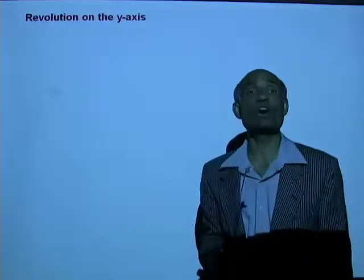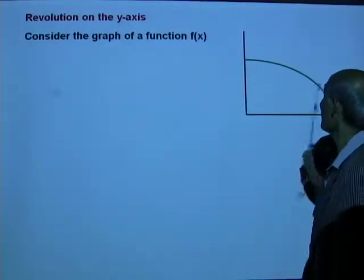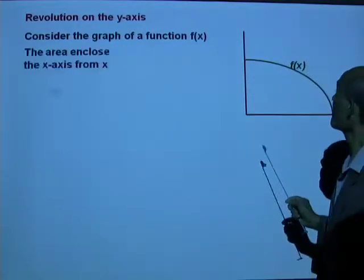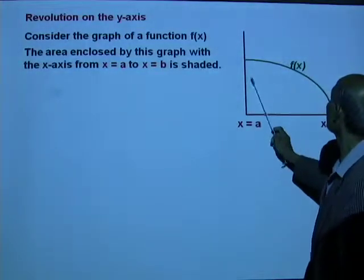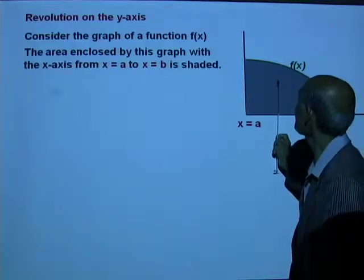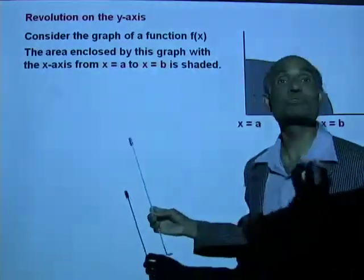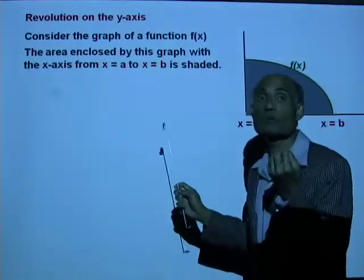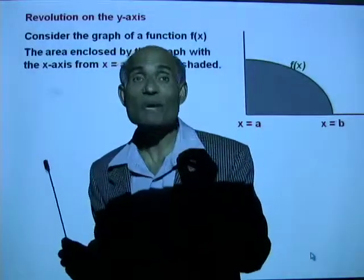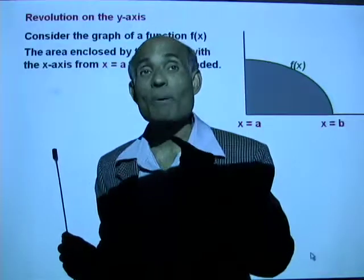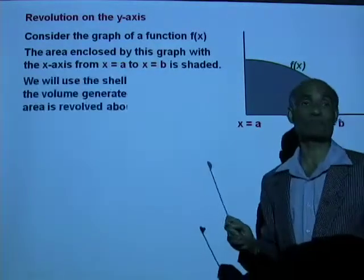We will first consider the revolution about the y-axis. Let's look at the graph of a function f(x). The area enclosed by this graph with the x-axis from x = a to x = b is the shaded area, and we need to revolve this about the y-axis. In the disk method, we take an element area at right angles to the axis of revolution, but in the shell method, we take an area parallel to the axis of revolution.